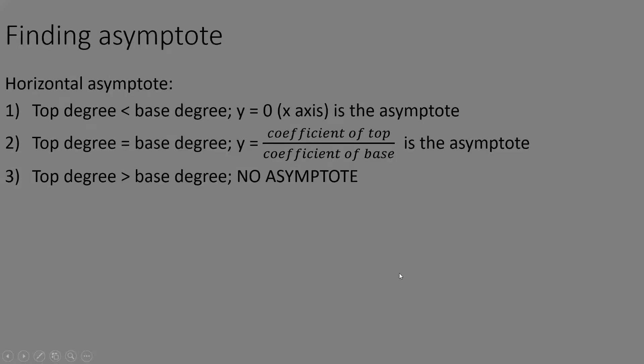For horizontal asymptotes: if the degree of the denominator is greater than the degree of the numerator, the x-axis is the asymptote. If the degrees are equal, the asymptote is the ratio of the leading coefficients (top over bottom). If the numerator degree is greater, there is no horizontal asymptote — though you mainly need to remember the first two cases.